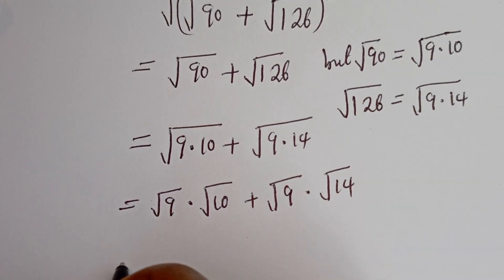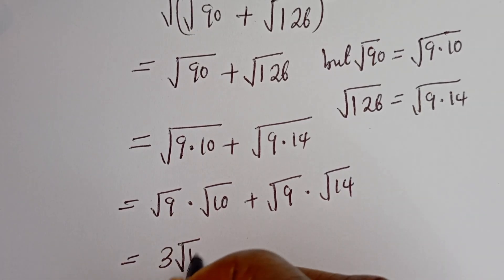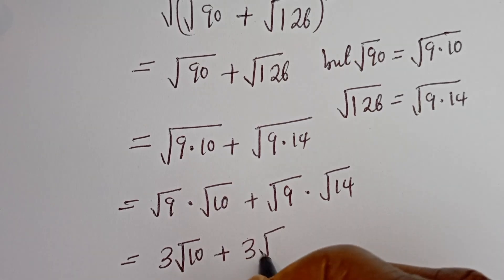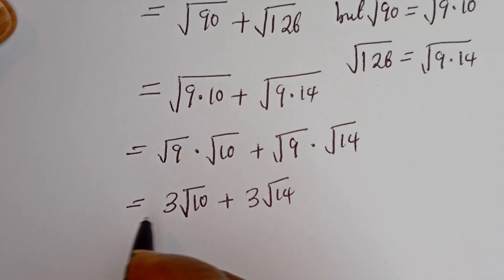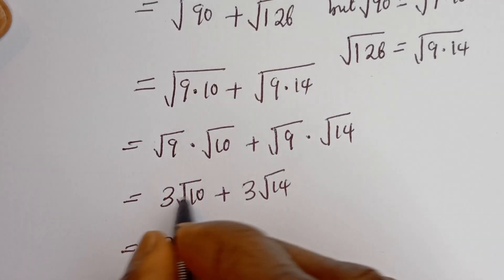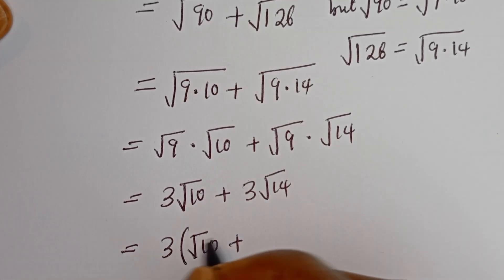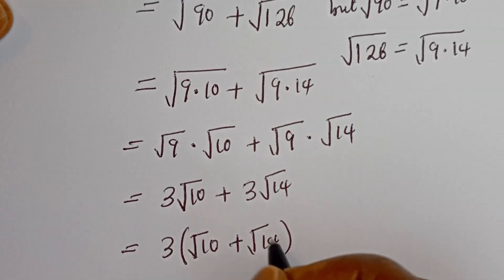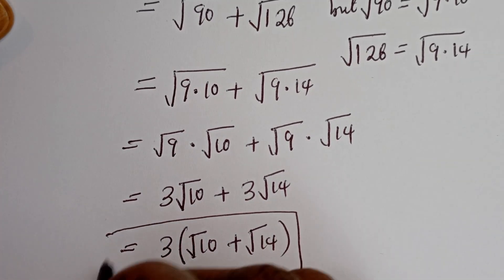Now square root of 90 equals square root of 9 times 10, and square root of 126 equals square root of 9 times 14. So this equals 3 root 10 plus 3 root 14. Since 3 is common, this equals 3 times root 10 plus root 14, and this is the final answer.